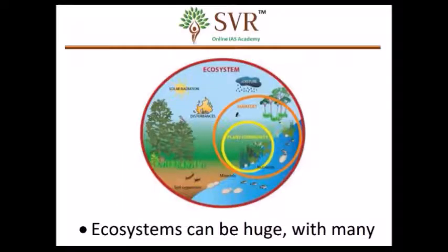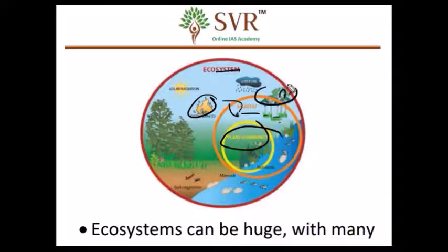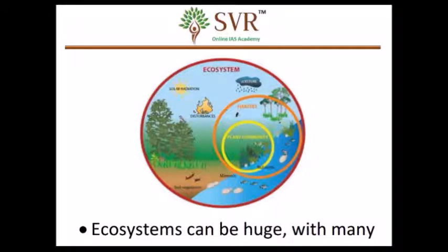In this image, you can see the plant community and animals interacting with each other, and there are a lot of abiotic factors like climate, habitat, air, and soil — all these are used by living organisms to interact with each other.